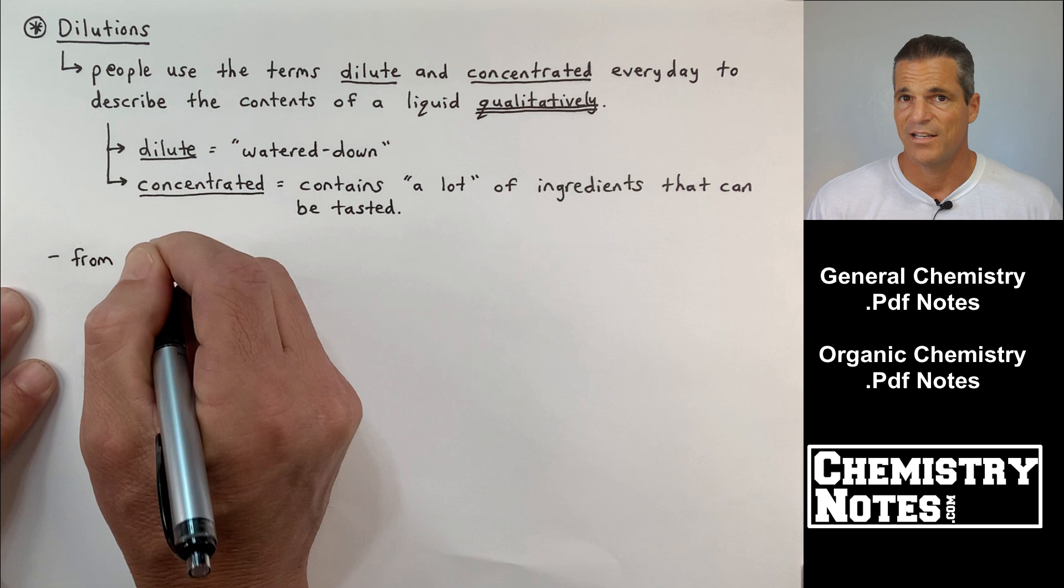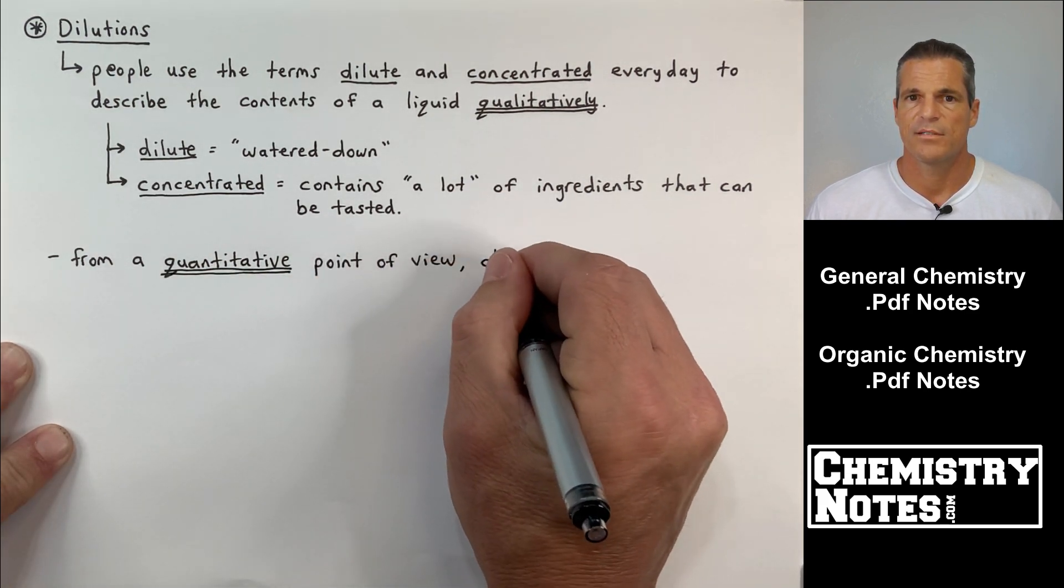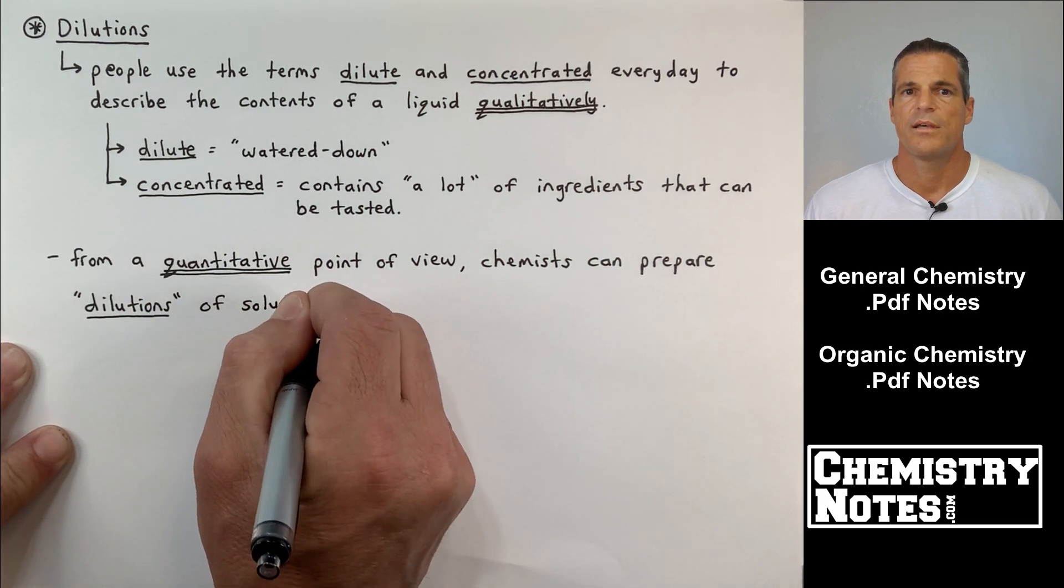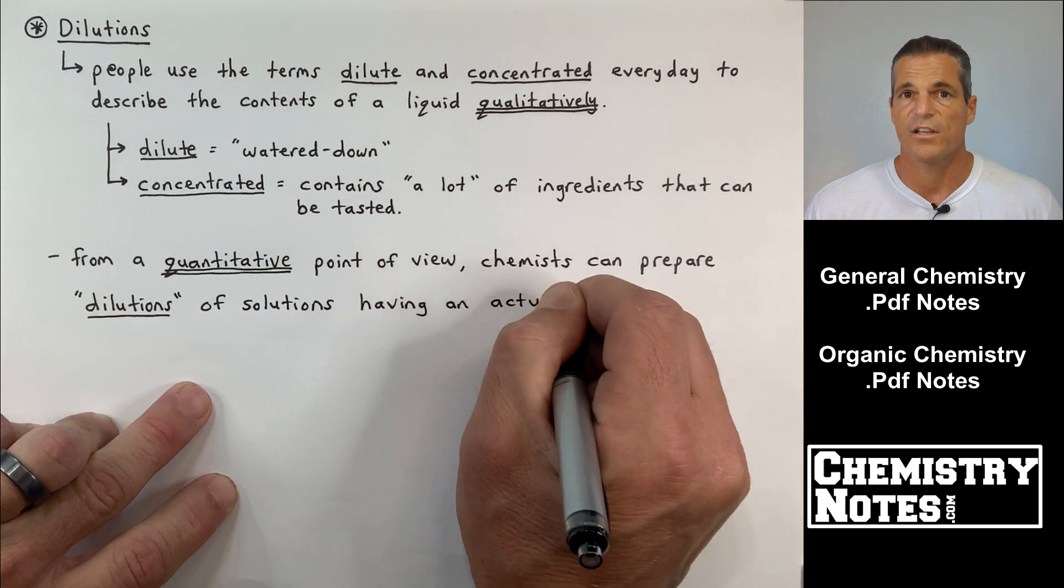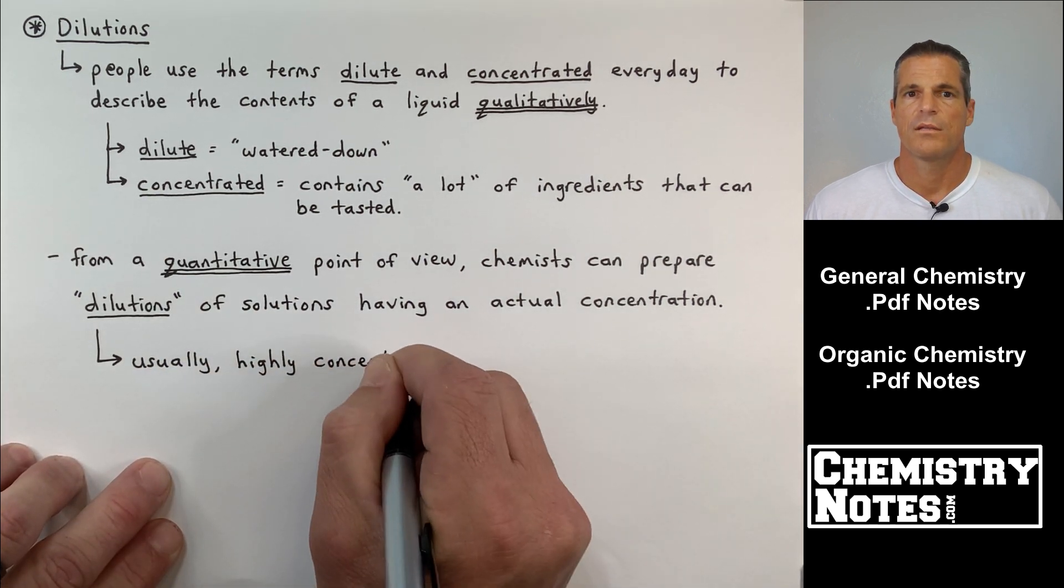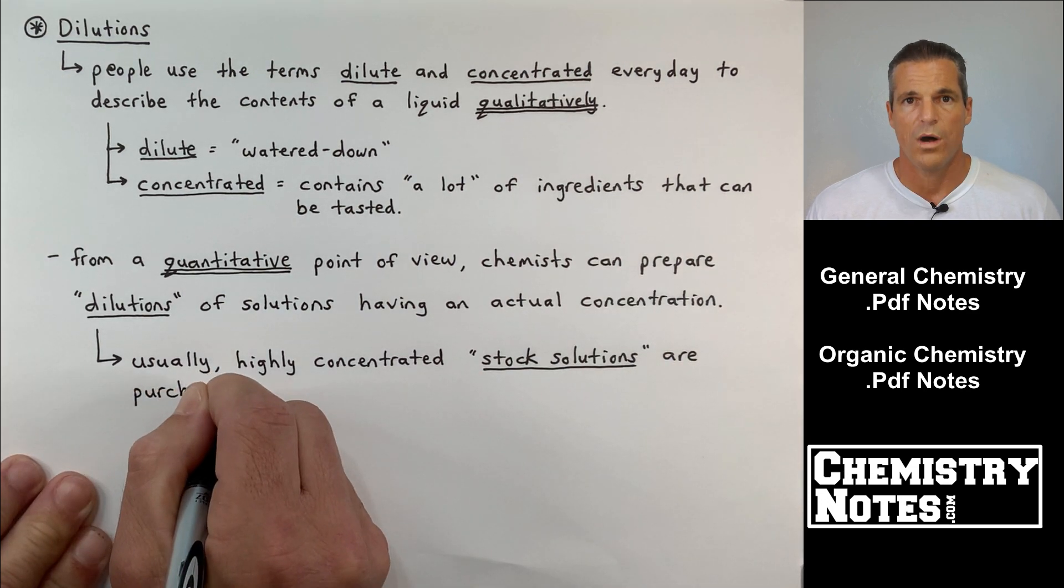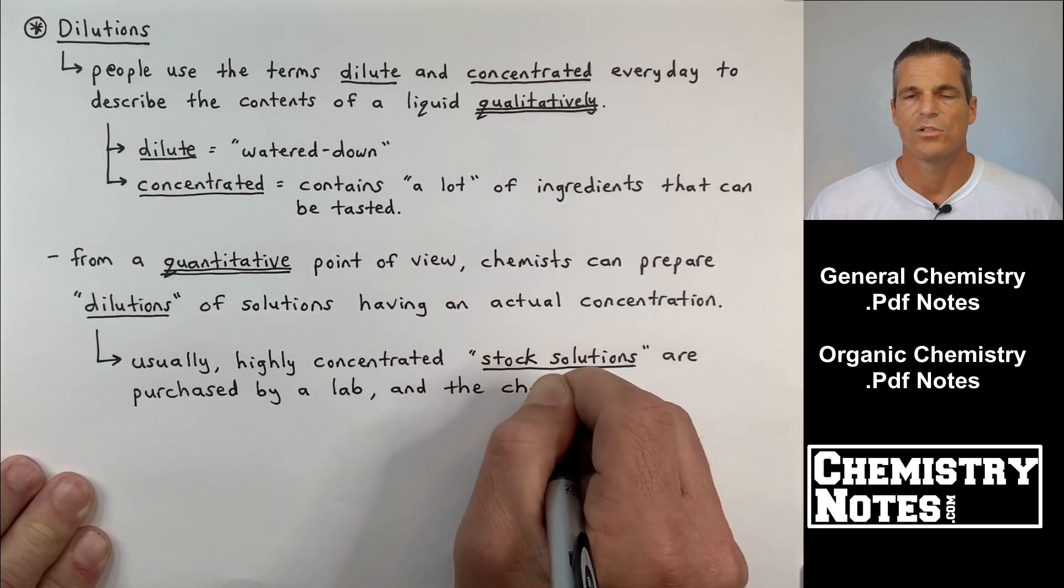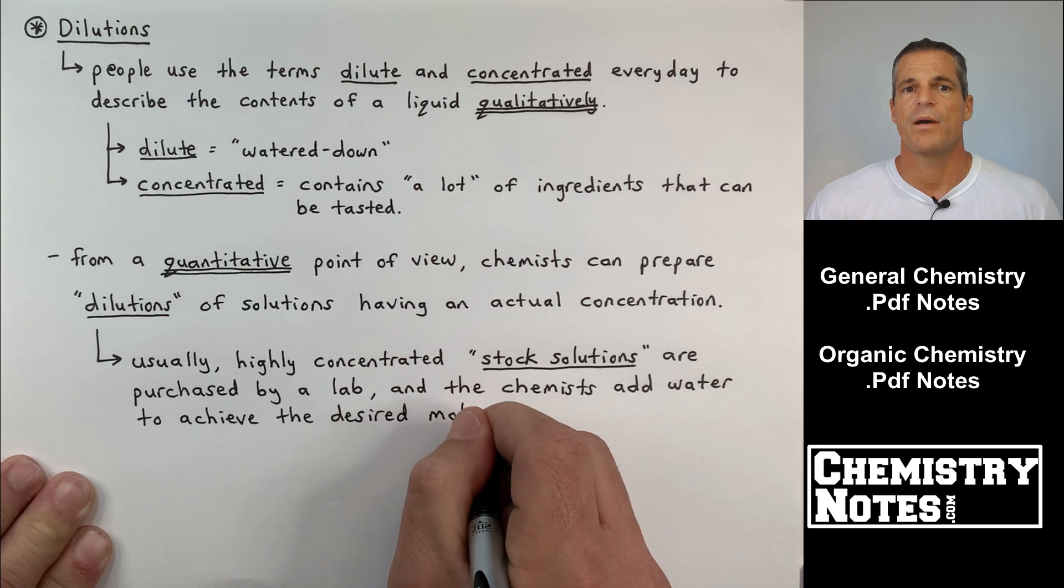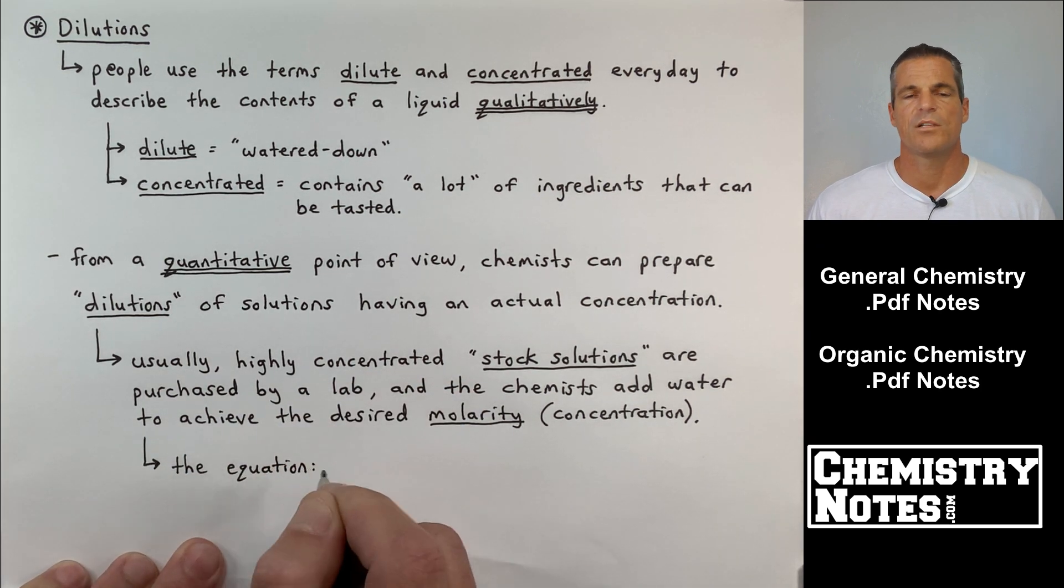Concentrated means it contains a lot of ingredients that can be tasted. Now that's in everyday life. We, of course, wouldn't taste anything in the lab, right? So that's a qualitative standpoint. From a quantitative point of view, chemists can prepare dilutions of solutions having an actual or a specific concentration. Usually, highly concentrated stock solutions are purchased by a lab. And then we take small amounts of that stock solution, add water to it to make the desired more dilute solution for our lab purposes. Usually, highly concentrated stock solutions are purchased by a lab. And the chemist will add water to achieve the desired molarity, the desired concentration.